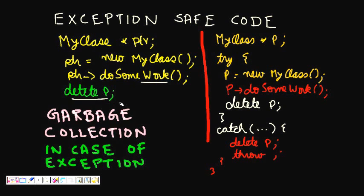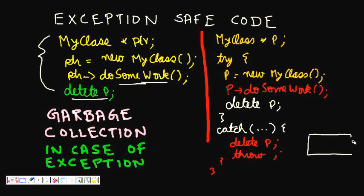The code looks fine at first glance. But what if there is a huge piece of code here and an exception occurs? MyClass took a huge chunk of memory, I'm doing some work, but in between I get an exception and the code crashes — so this delete line never executes.